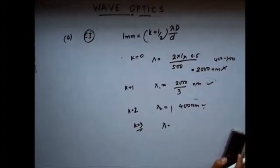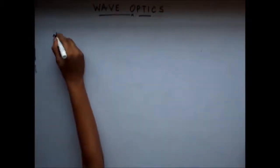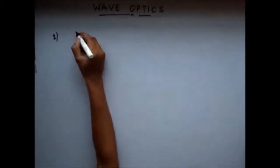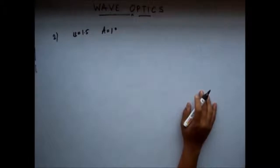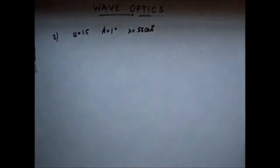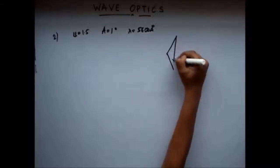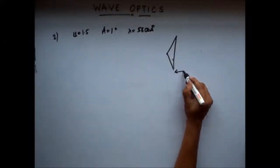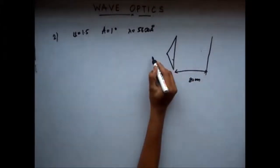So those were the two wavelengths absent at 1 millimeter from the center line. Now let's move on to the second question. The second question is about a Fresnel biprism. It has a refractive index of 1.5 and an angle of prism of 1 degree. It is used to develop an interference pattern on a screen, and the wavelength used is 5600 angstrom. The distance between the screen and the prism is 80 centimeter, and the distance between the prism and the source is 20 centimeter.